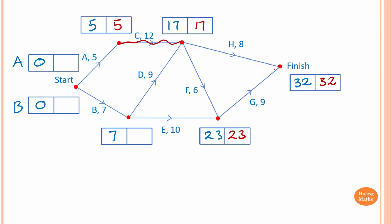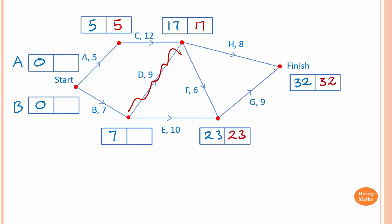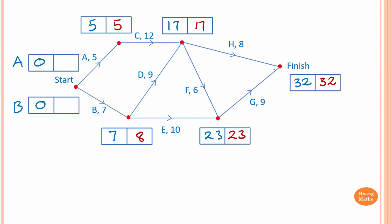So we write 5 here. To come back to activity B, we take the smallest value from the two paths. Going via D: 17 minus 9 is 8. Going via E: 23 minus 10 is 13. The smallest value is 8, so we write 8. For activity B, 8 minus 7 is 1. For activity A, 5 minus 5 is 0.